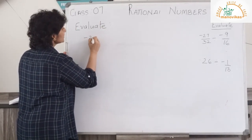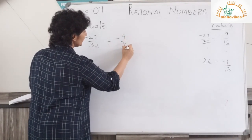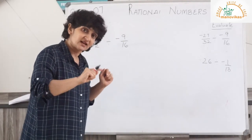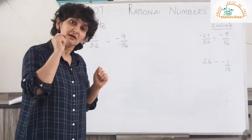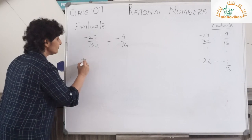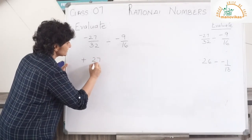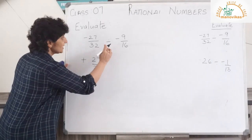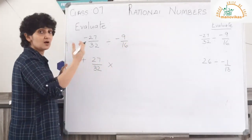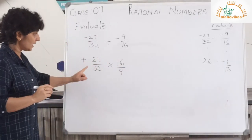Evaluate minus 27 upon 32 divided by 9 upon 16. You know your integers with their signs — plus divided by minus makes it minus, and here I have minus divided by minus, so my answer will give me plus. Let's ignore the signs and begin with the sum: 27 upon 32, and divide becomes a multiply sign, with 9 upon 16 giving you the reciprocal as 16 upon 9.